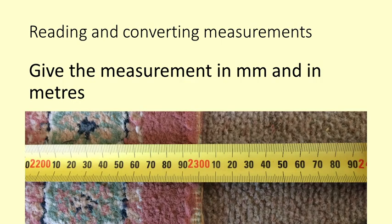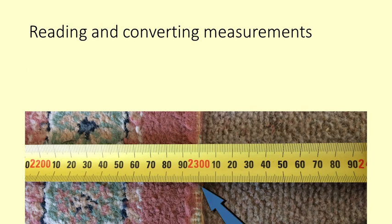Reading and converting measurements. Look at the measuring tape, work out what the measurement is in millimetres and then convert to metres. 2300 millimetres, 2.3 metres.